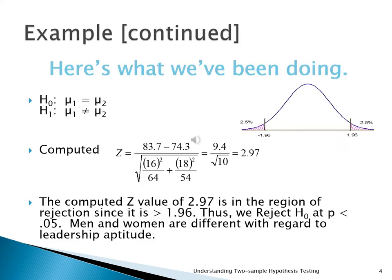We end up with a z-value of 2.97. The z is a distribution — we need that to get a probability. Our computed z-value of 2.97, if we're testing at the 0.05 level with a two-tailed test, needs to be greater than 1.96 on the positive side or less than minus 1.96 on the left tail to reject. Anything between plus 1.96 and minus 1.96, we don't reject.